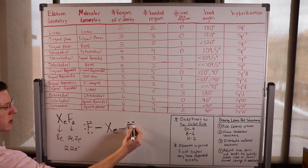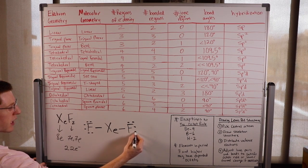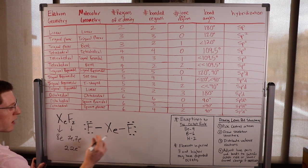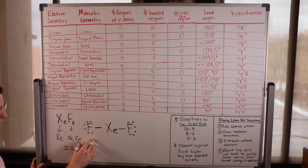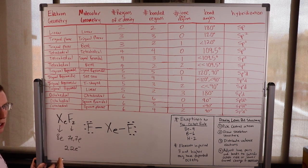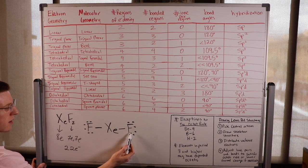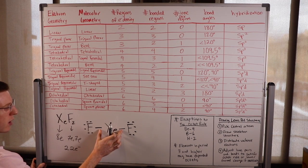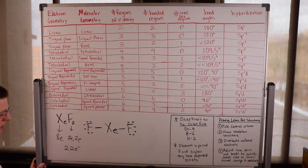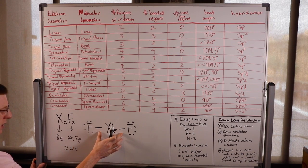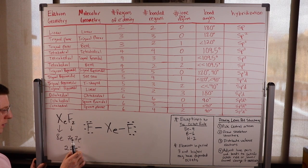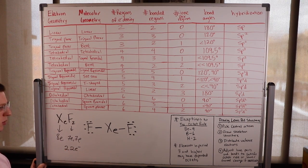Let's start satisfying the valence shells of the outer atoms. Fluorine wants eight to satisfy its octet rule. Now they've both got eight total. We used six on each fluorine plus four for the bonds — 12 plus four is 16 — but we have 22 available, so we still have six more electrons.